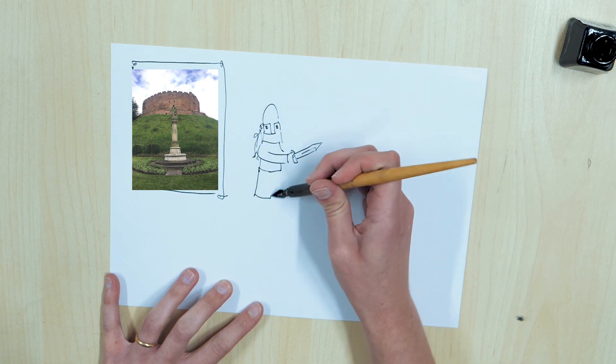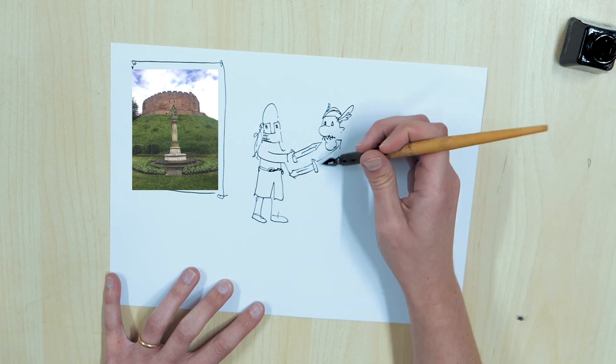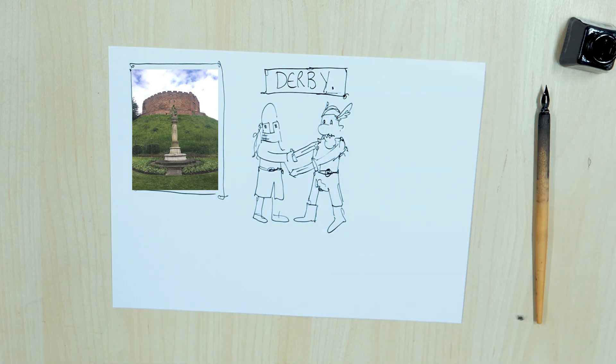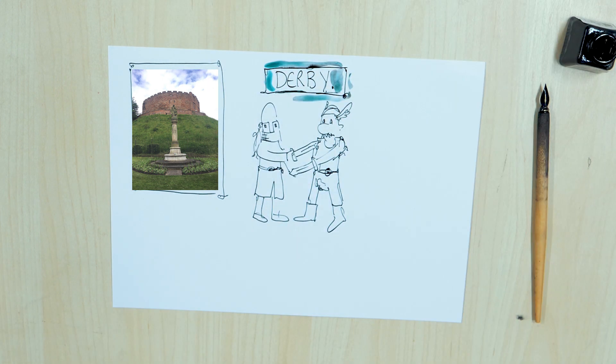Not content with just protecting her land, she wanted to claim back what the Vikings had previously taken. Following her father's footsteps, Aethel wasn't afraid to lead her men into battle and was a fierce warrior, and quite famously beat the Vikings to claim back Derby.